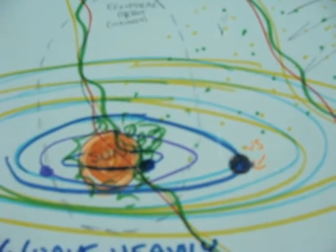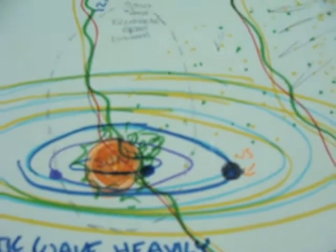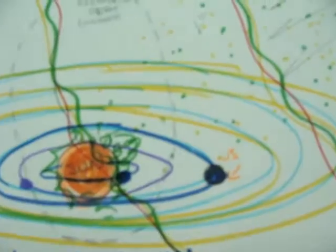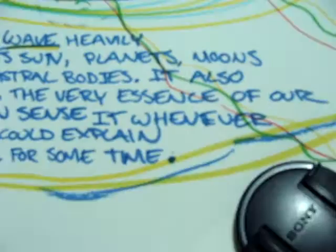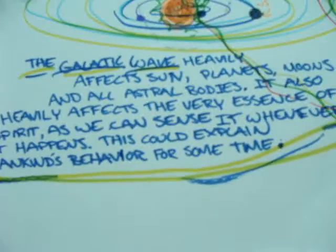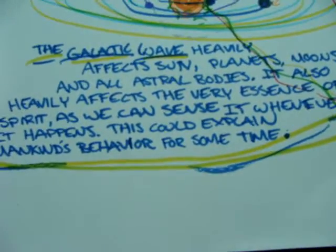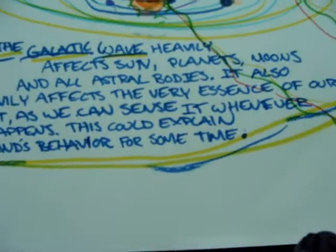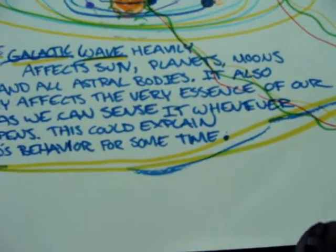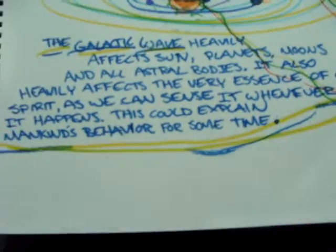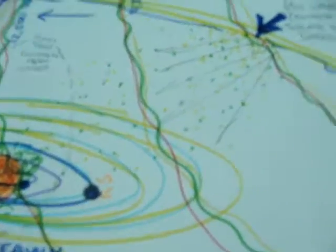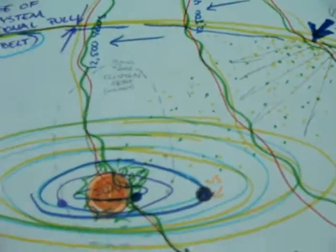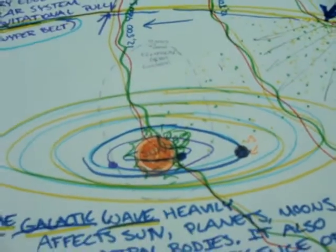These waves not only interact with the sun directly and cause major solar problems, but they also interact with the planets and moons and all the astral bodies. The galactic wave heavily affects the sun, the planets, the moons, and all astral bodies. It also heavily affects the very essence of our spirit. This could explain mankind's behavior — why we go into highs and lows in human spirituality and awareness between these waves.